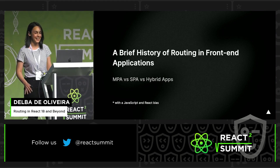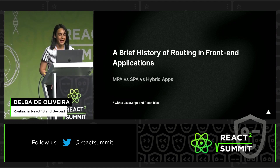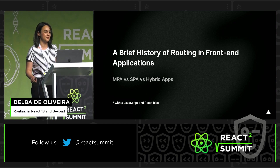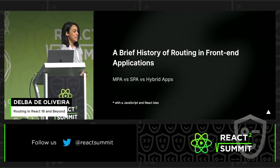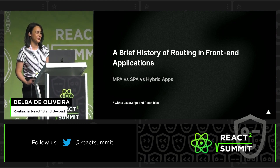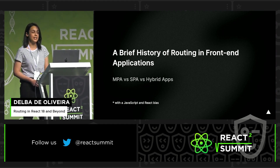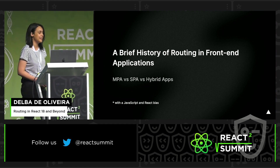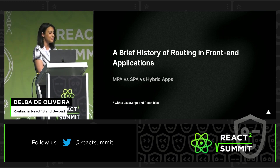To give everyone here some context, I think it's important to just take a step back and look at how routing has evolved in front-end applications. Please note, I'm going to be condensing years of routing history in about five minutes, so there's a lot more nuance. One way we can look at routing is through the type of applications we can build: multi-page applications, single-page applications, and, more recently, hybrid apps.